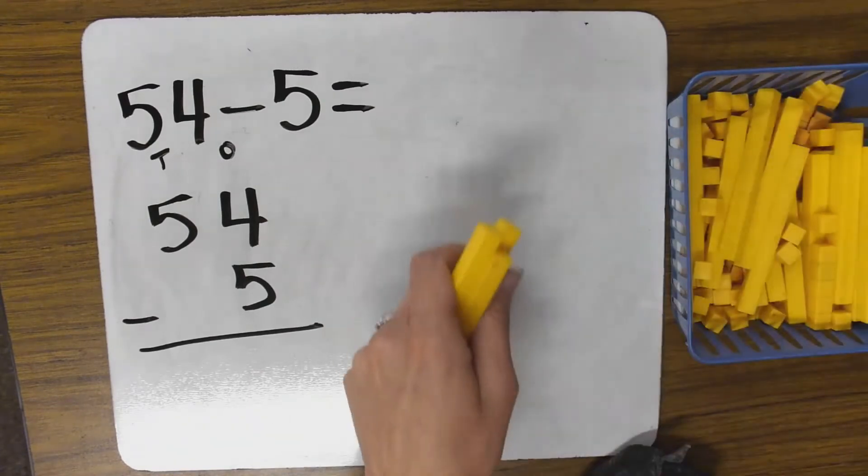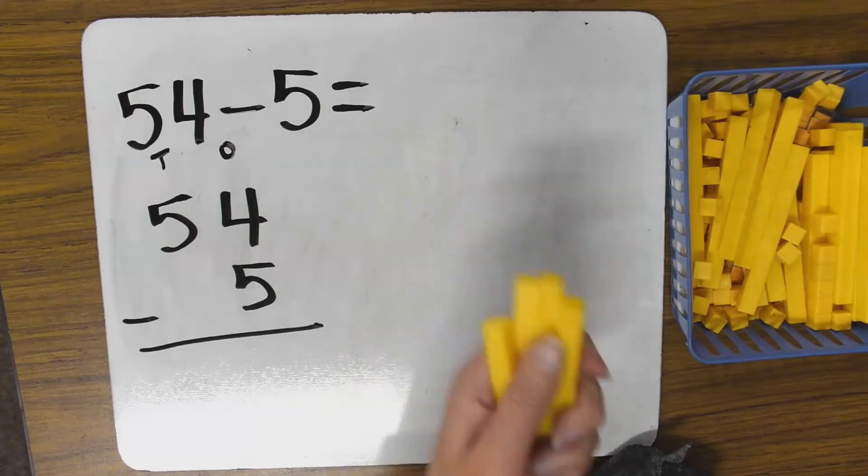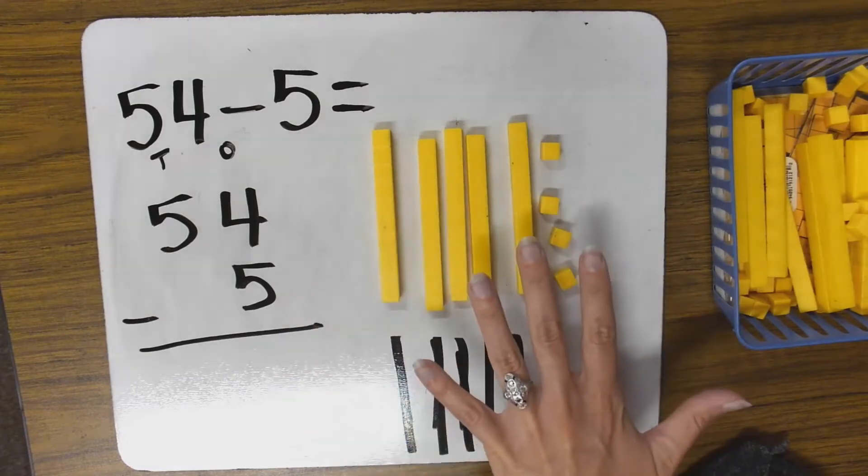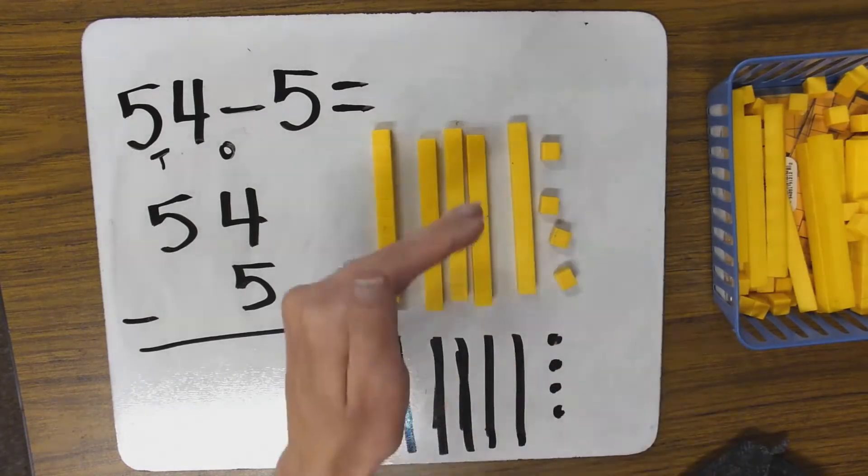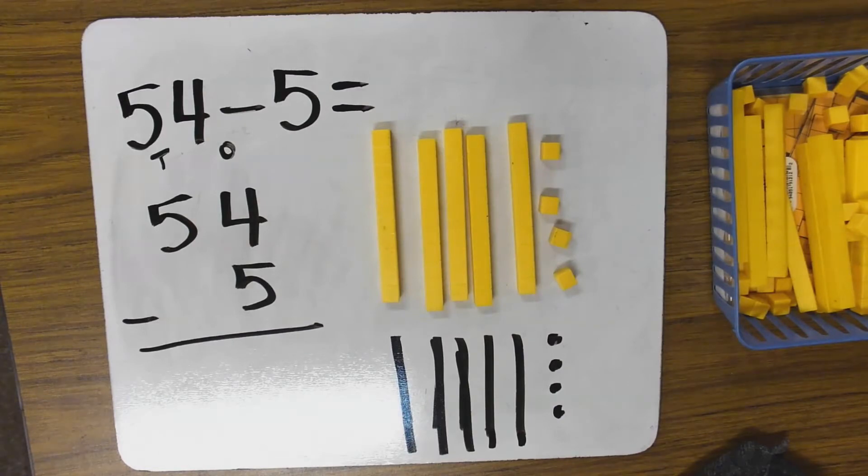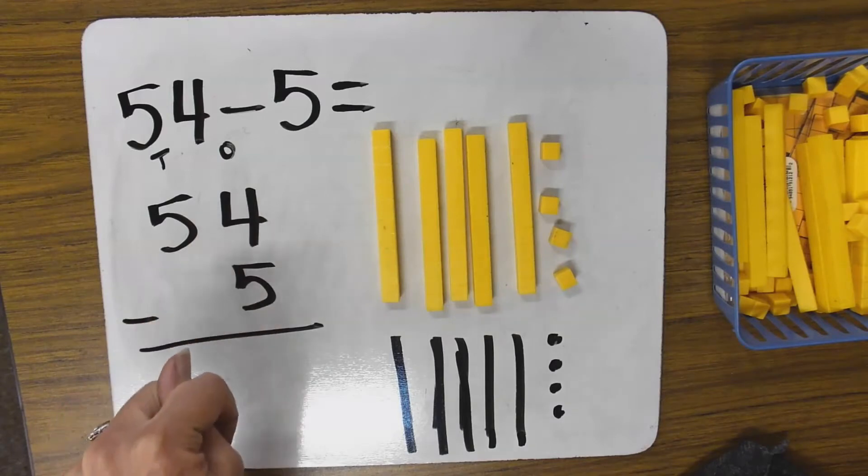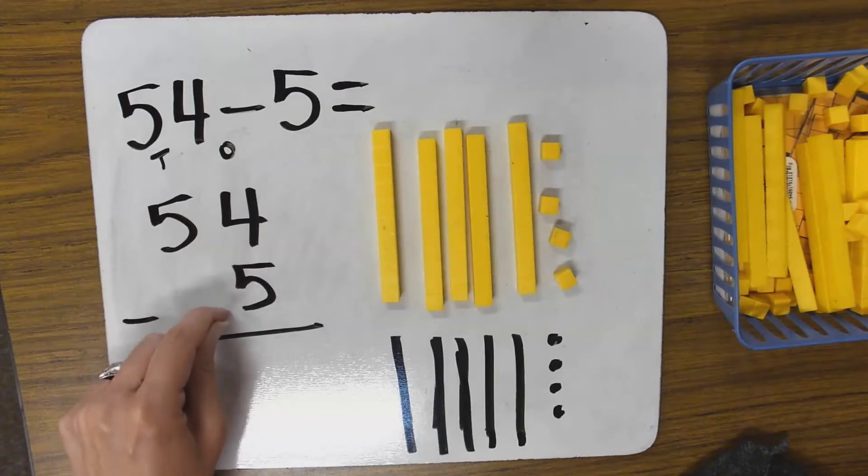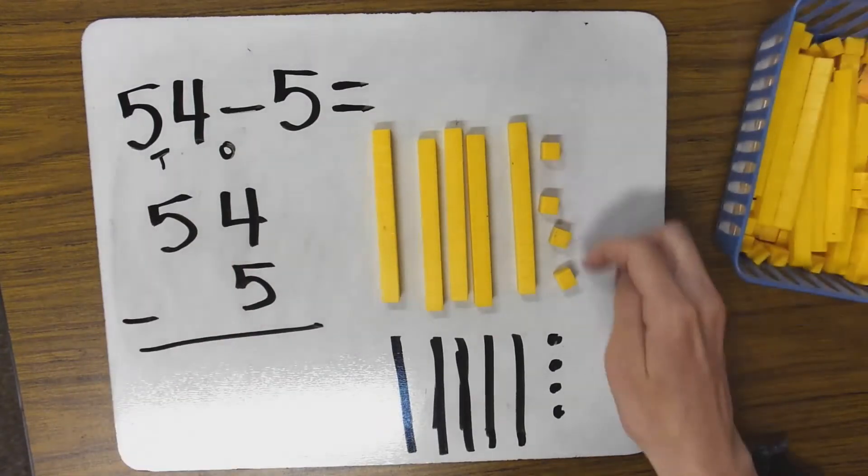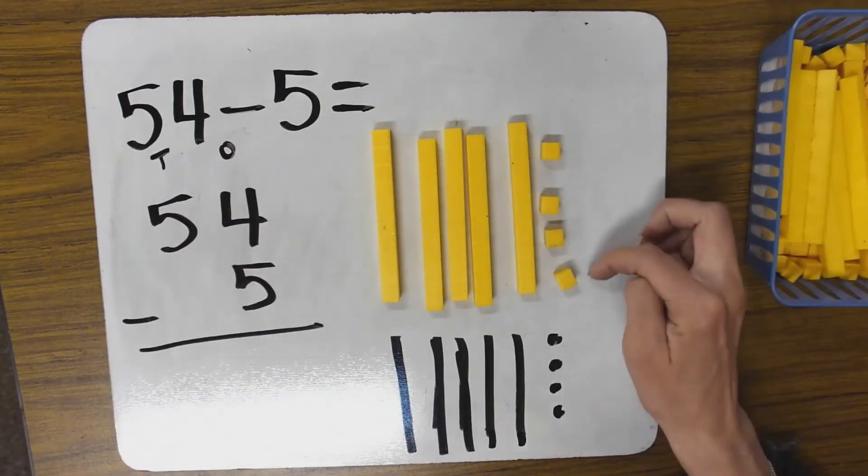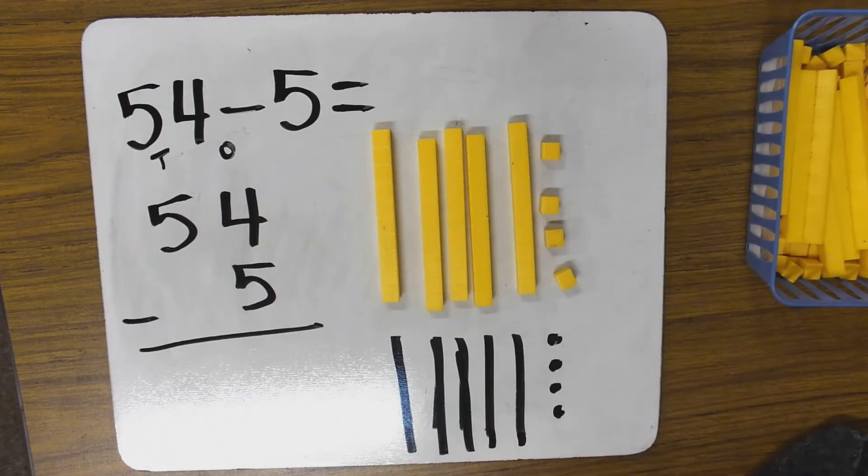Now I spaced them out a little bit because when I do regrouping I'm gonna need some space. Now I can build this with my base ten blocks or I can draw a picture of what 54 will look like. Here are my base ten blocks, here's the picture. Same thing, I'm just showing you both at the same time. Now you might find it easier to use one or the other but go with what you need. So here I always start with the ones. Never start with the tens. I'm gonna start with the ones and I need to do 4 minus 5. Do I have enough ones here to subtract 4 minus 5? I don't.